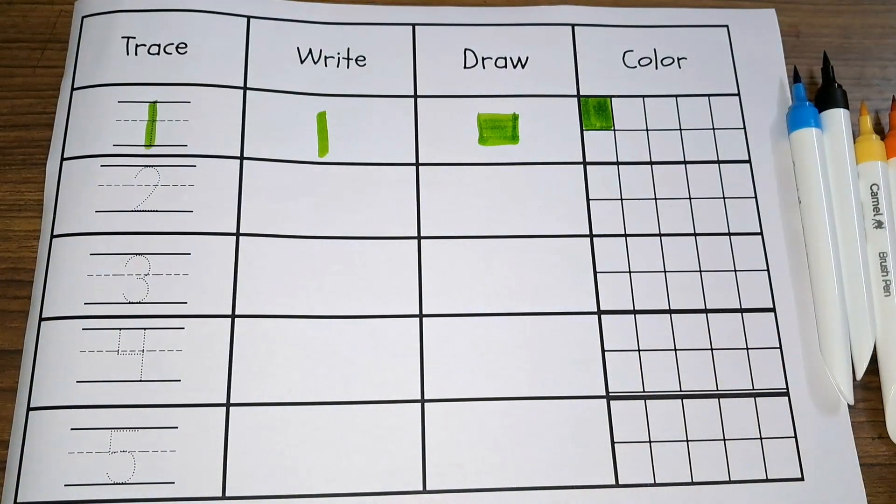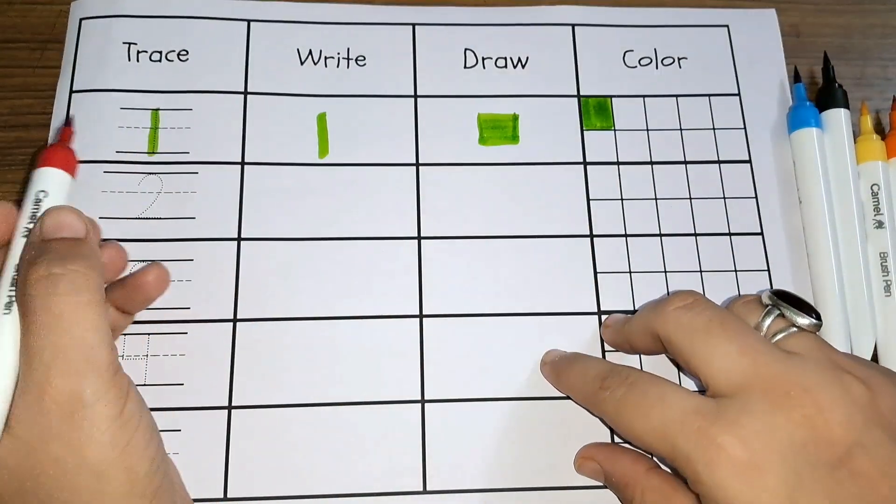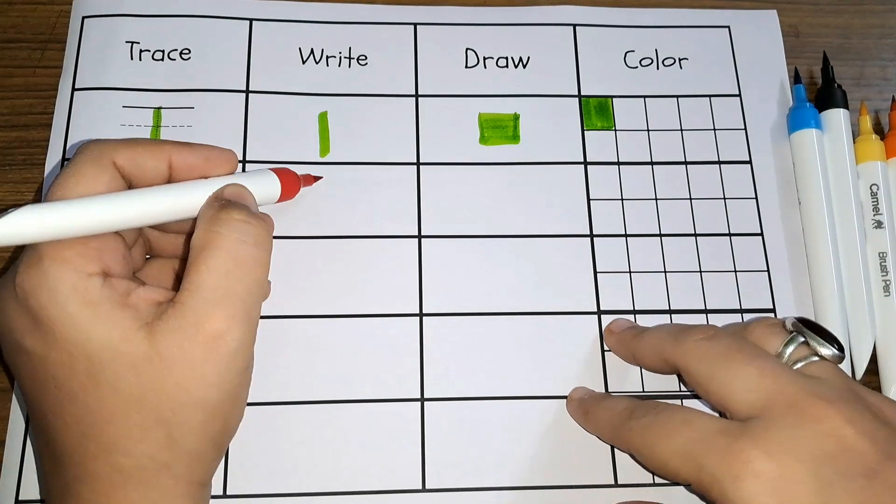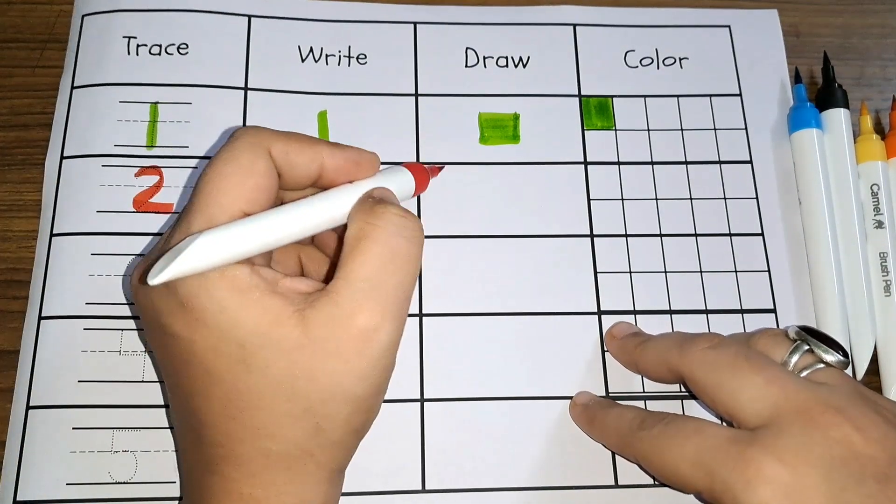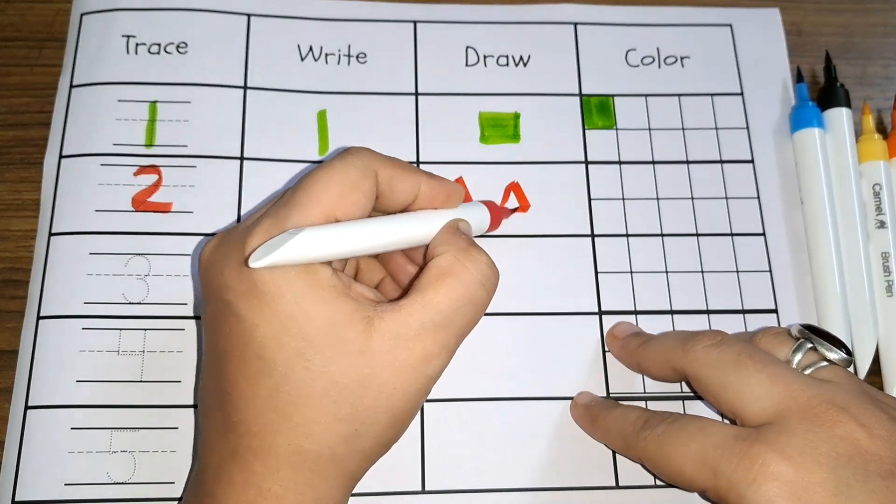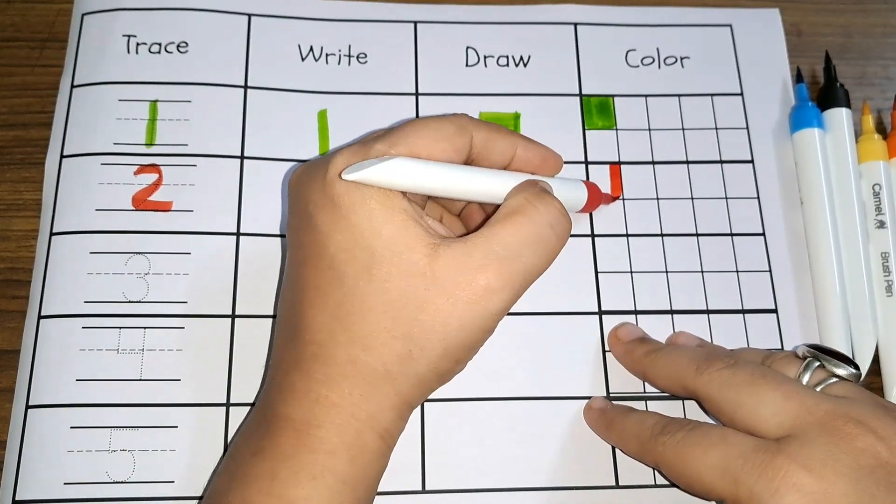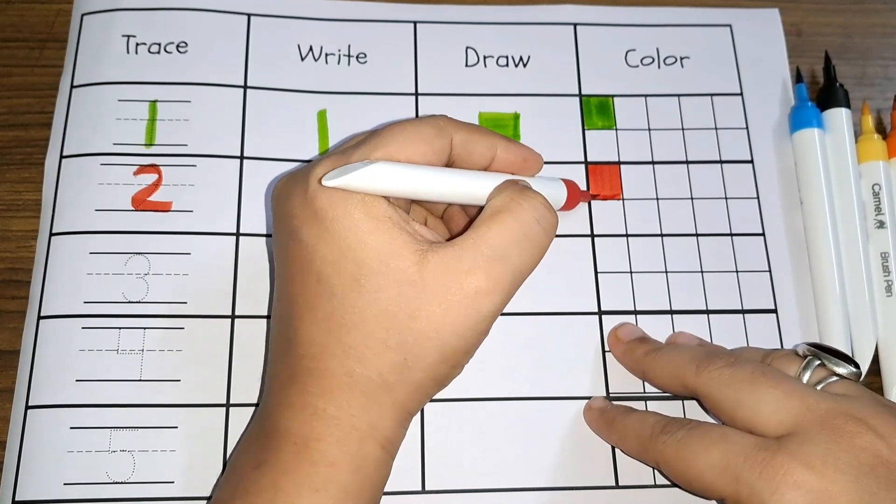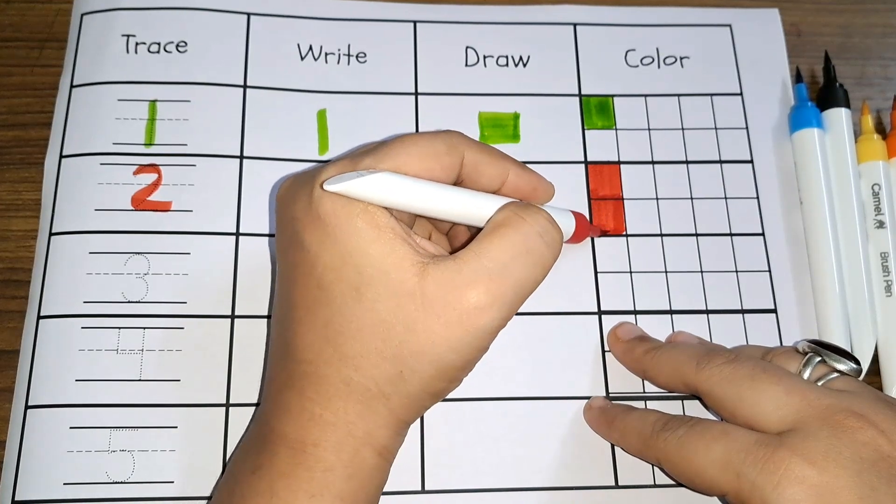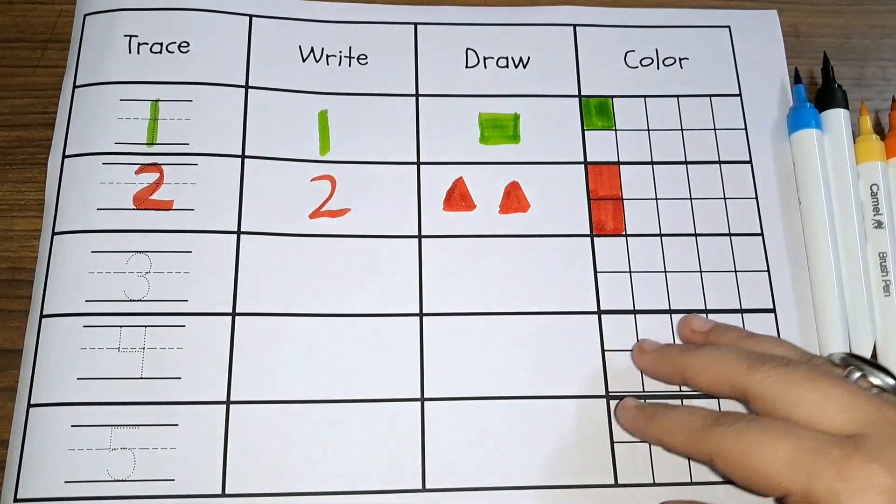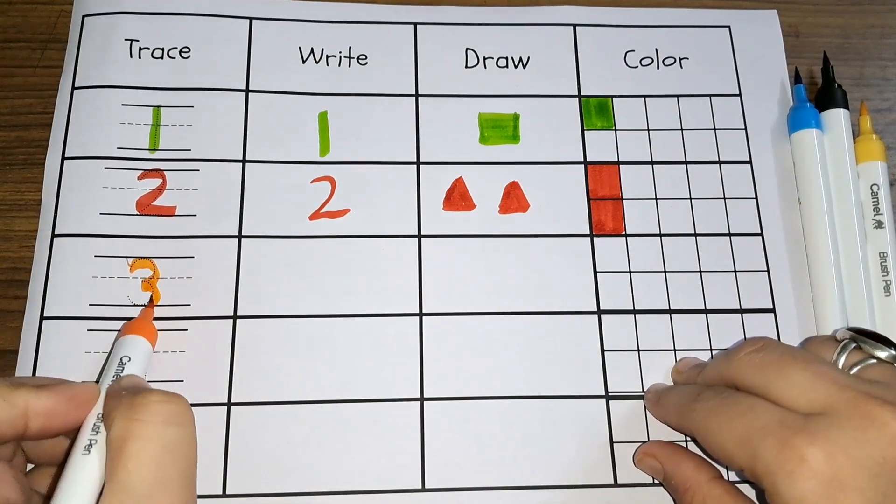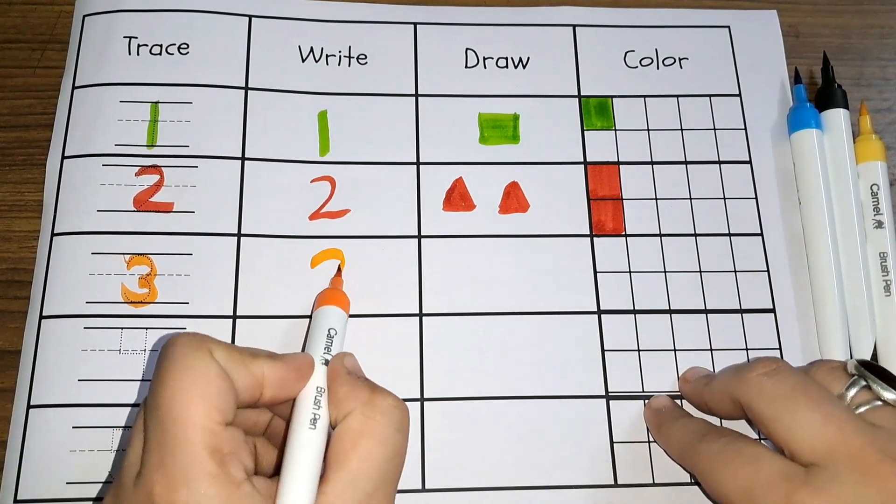Red color, number 2, number 2. 2 triangles, 1 and 2. 2 squares. Number 3, number 3.